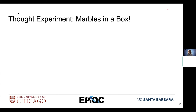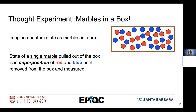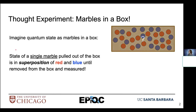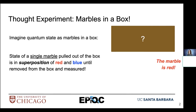Let's start with a thought experiment. Think about some marbles in a box — we have a quantum state we're going to picture as a bunch of marbles put into a box. In this box, we have red marbles and blue marbles. We'll consider the state of a single marble that we pull out of the box as a superposition of both red and blue — we don't know the color of this marble until we take it out and measure it. So here our measurement device will be our visual observation of the color of that ball. We could pull out a blue marble or a red marble.